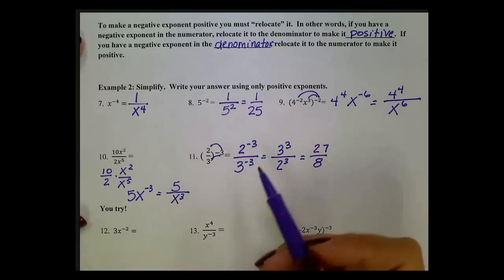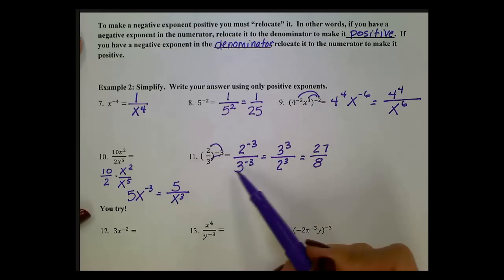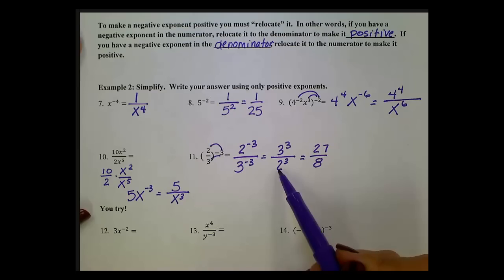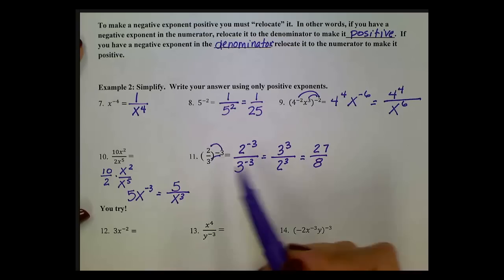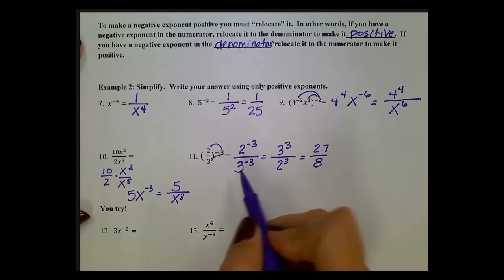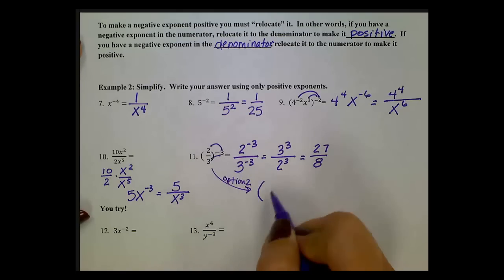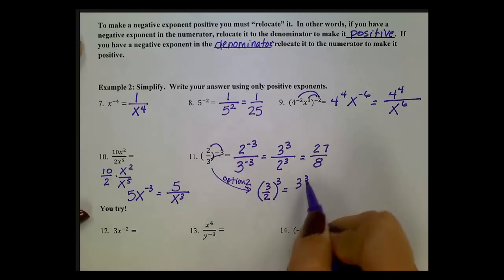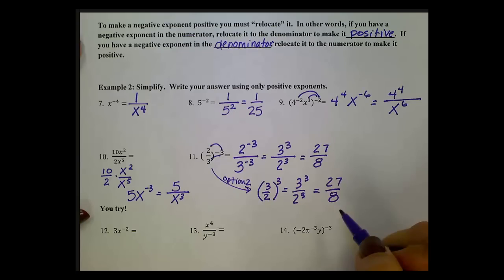Notice what happened: we had 2 thirds, and after our work we ended up with 3 over 2, which is the reciprocal, with positive exponents. Option 2: if you have a fraction raised to a negative exponent, you can take the reciprocal of the fraction to the positive. So 2 thirds to the negative 3rd becomes 3 over 2 to the positive 3rd, which is 3 to the 3rd over 2 to the 3rd, which is 27 eighths. There are two possible ways to approach this problem.